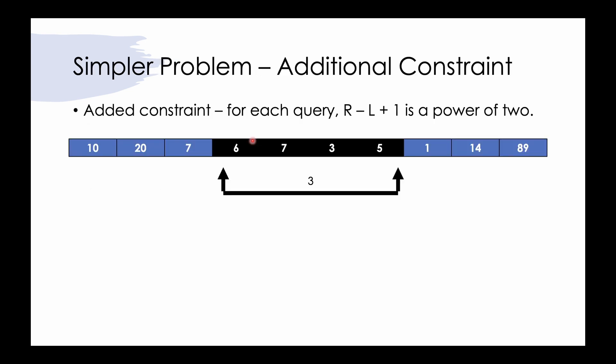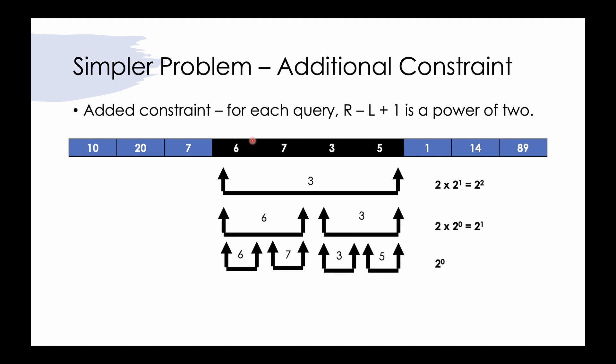Let's call an interval good if its size is a power of 2. For now, let's consider a simpler problem where each query interval is good. A good interval of size 4 can be broken down into 2 good intervals of size 2, and a good interval of size 2 can be broken down into 2 good intervals of size 1. This is due to the fact that 2 to the power i can be written as 2 to the power i-1 plus 2 to the power i-1.